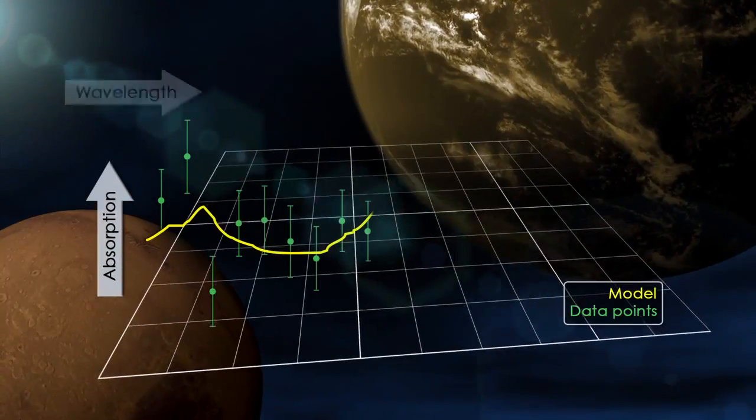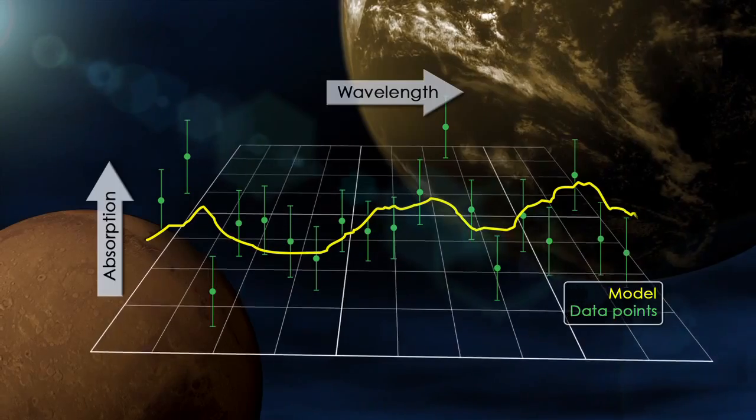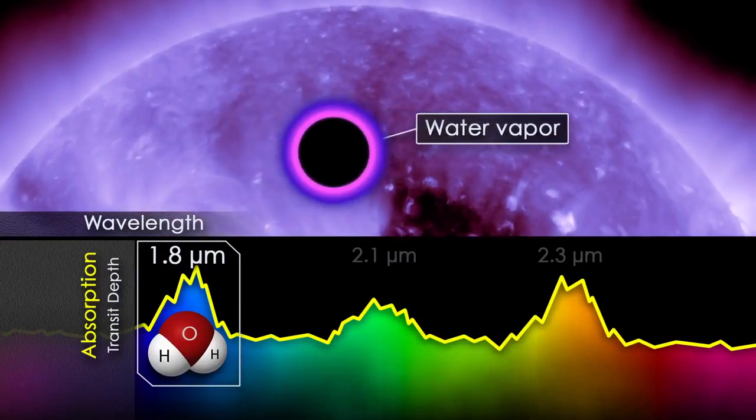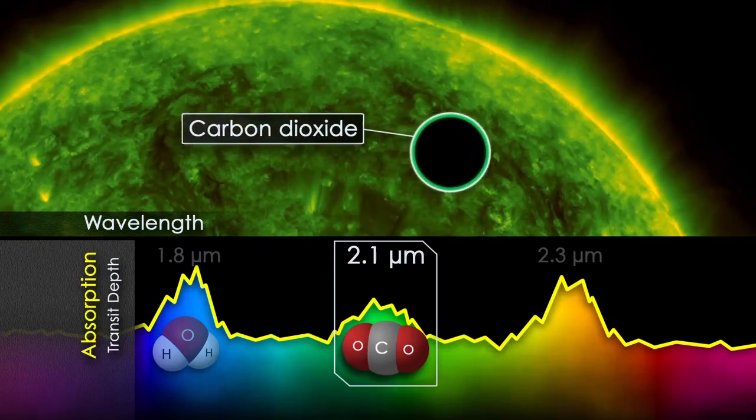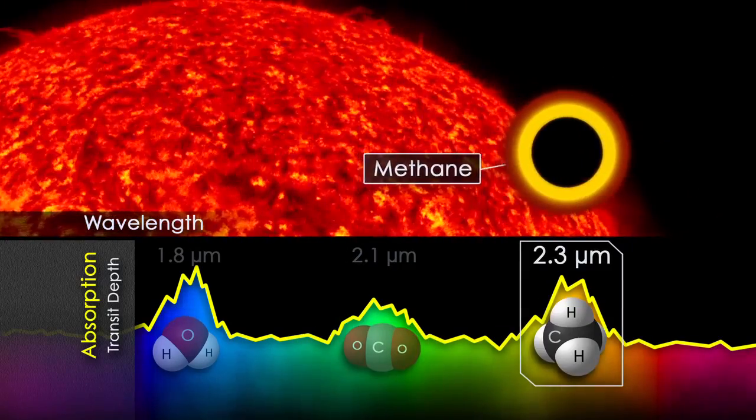Measuring the depth of absorption at each wavelength gives astronomers the planet's transit depth curve, which allows them to model the composition, height, and density of the atmosphere, providing a detailed picture of the planet.